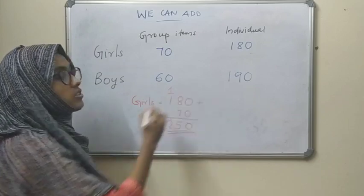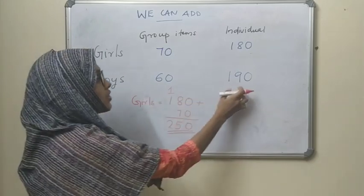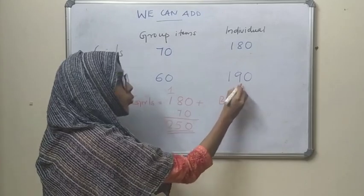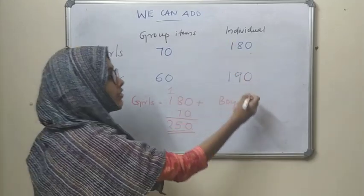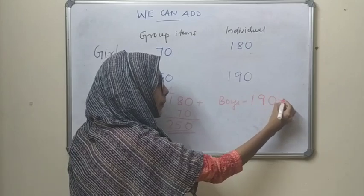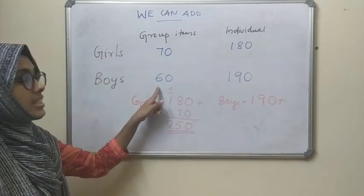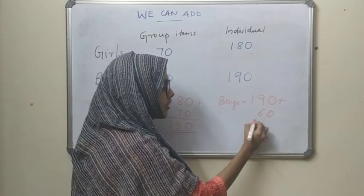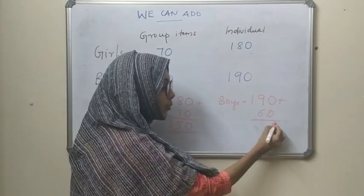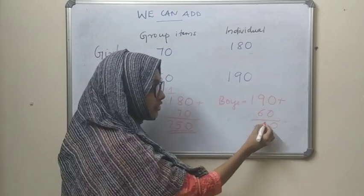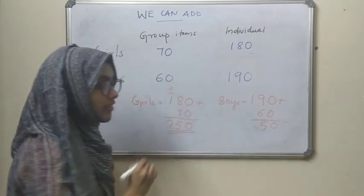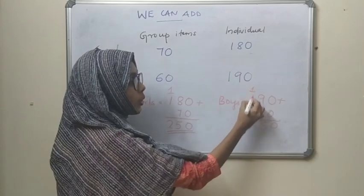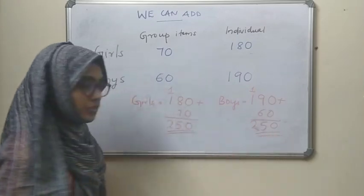Now we find the total score of boys: 190 plus 60 in group items. 0 plus 0 is 0. 9 plus 6 is 15 — write 5 and carry 1. 1 plus 1 is 2. So boys' total is also 250.